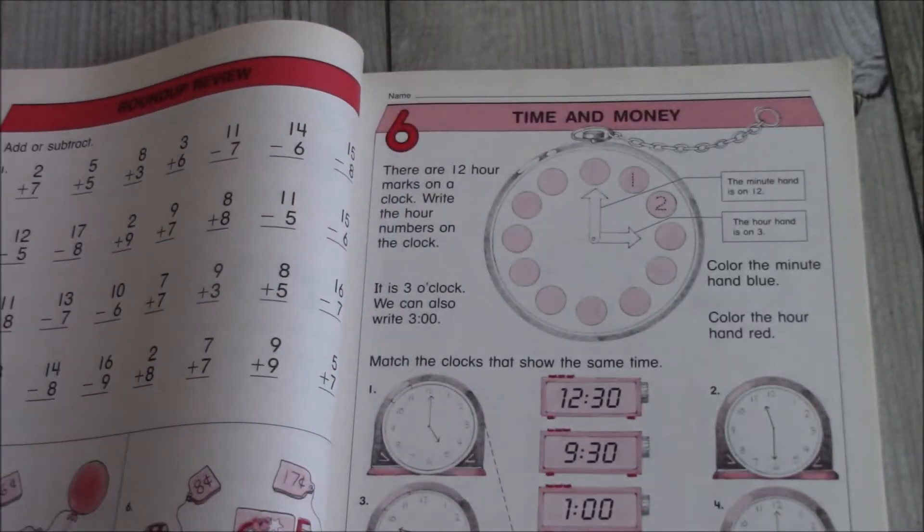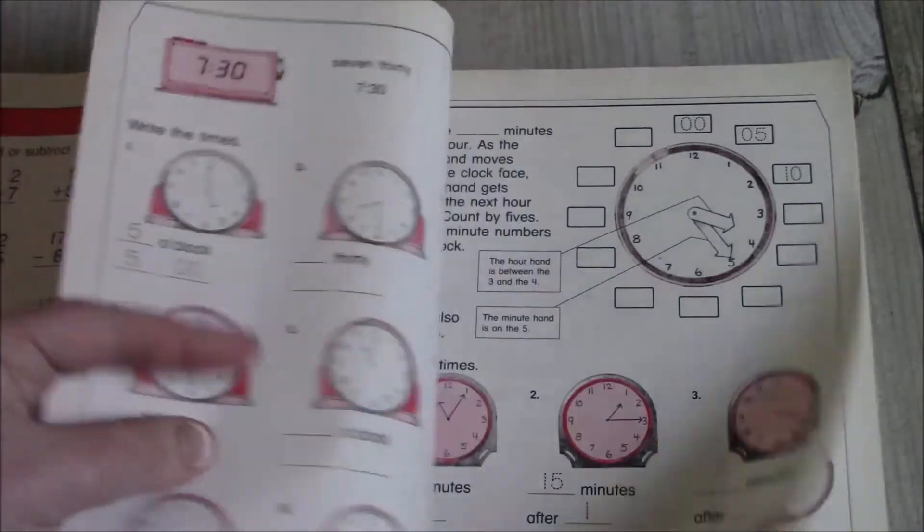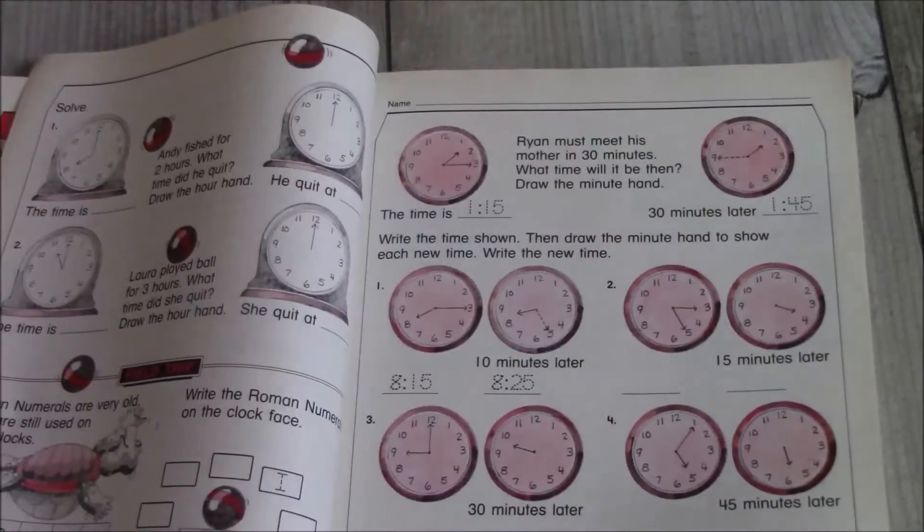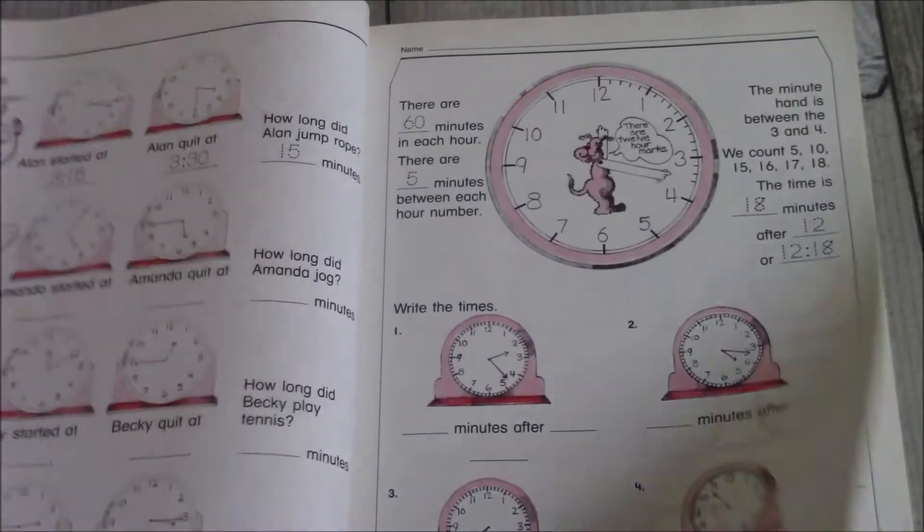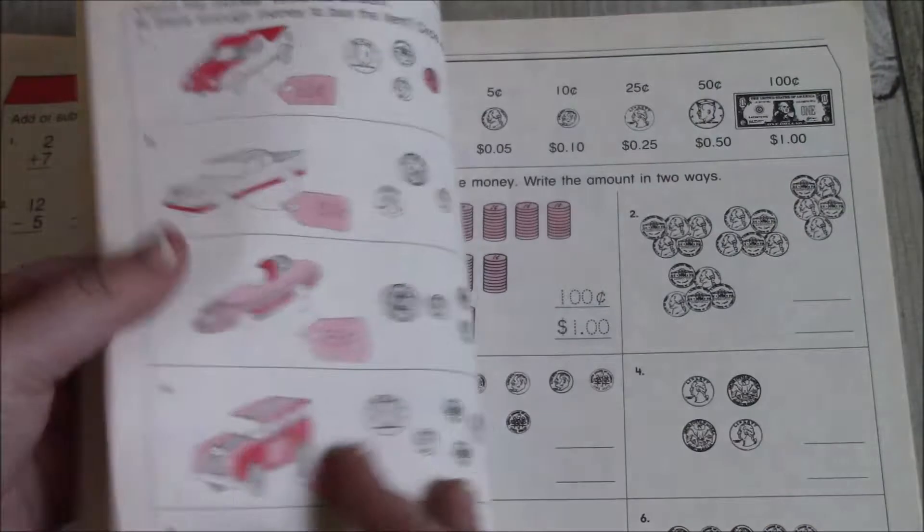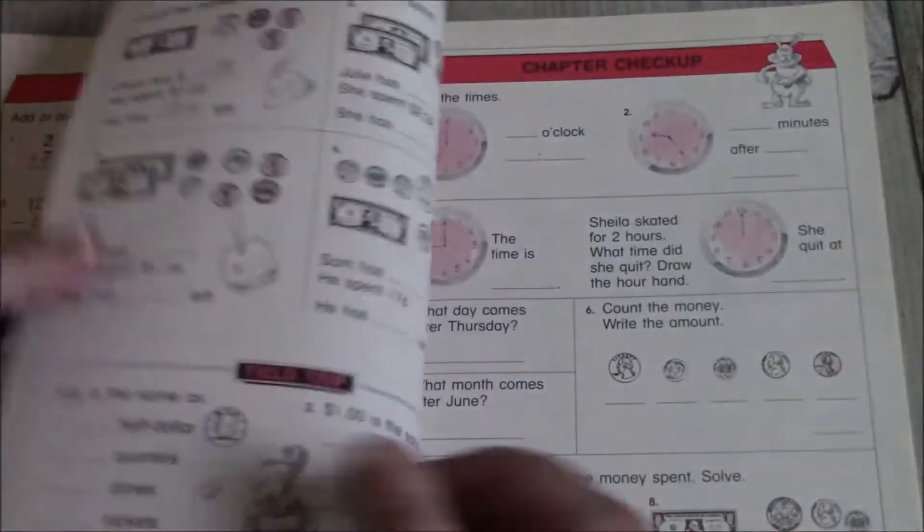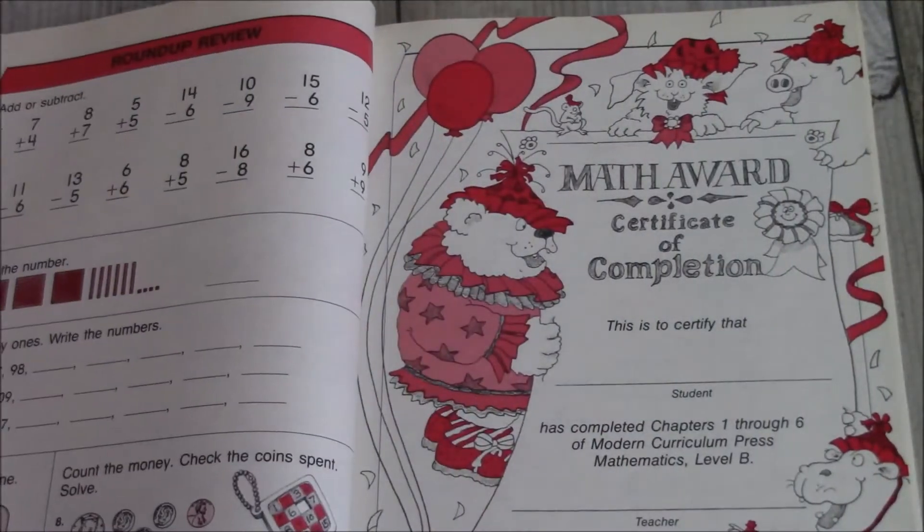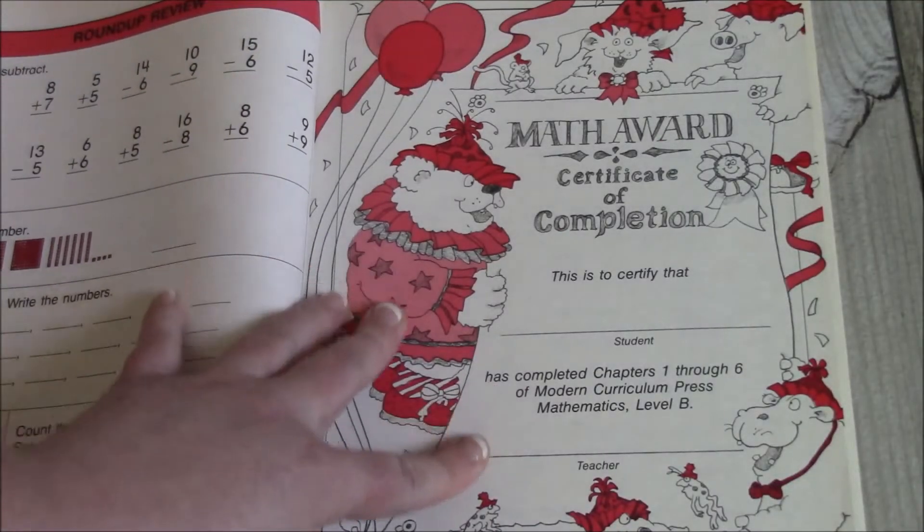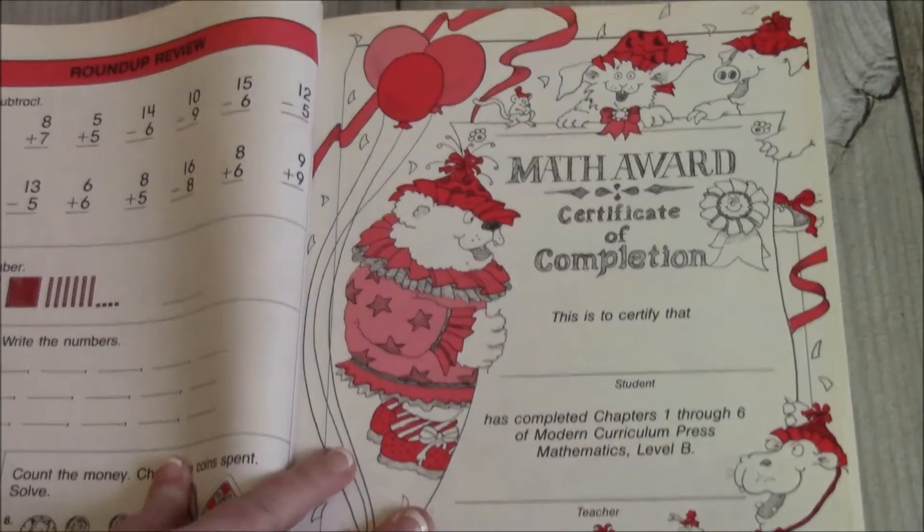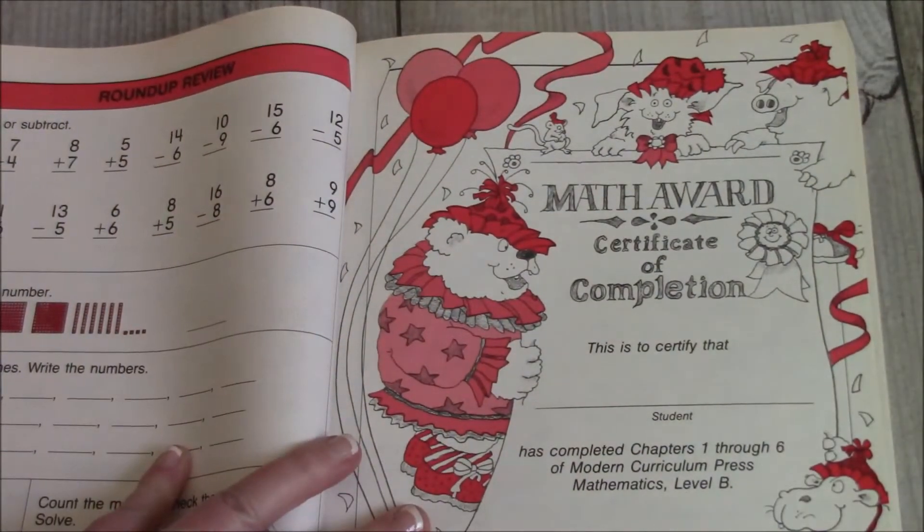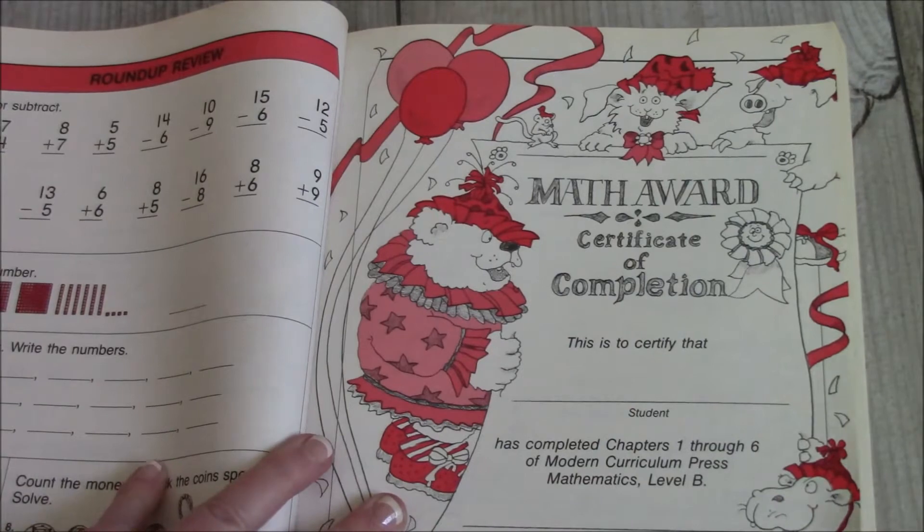Chapter six is time and money. Again, a little bit of a reminder. But now we're not just going to the hours. We're going to the minutes. Some calendar work. Some money work. And then at the end of chapter six, has completed chapters one through six of level B. So this is like the highlight. I wonder if this would hit like your 100 days of school.